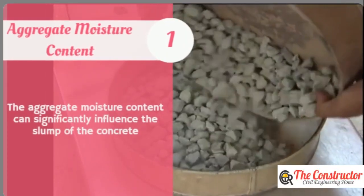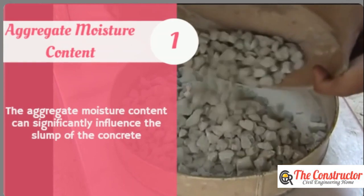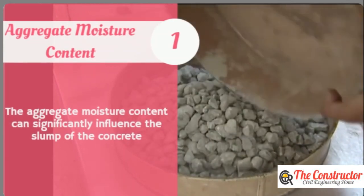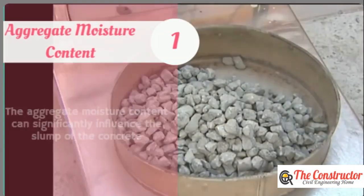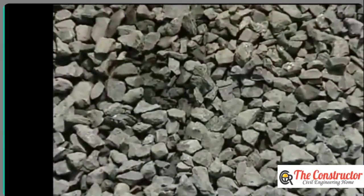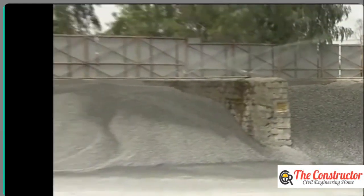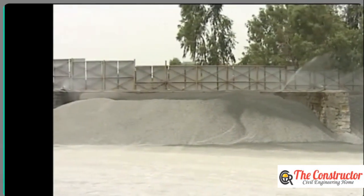The aggregate moisture content is maximum in the morning and decreases as the day progresses due to heat from sunlight. It is clear that the measurement of moisture from aggregate cannot be controlled, and hence variations in concrete slump cannot be entirely avoided.